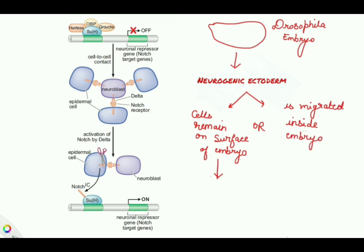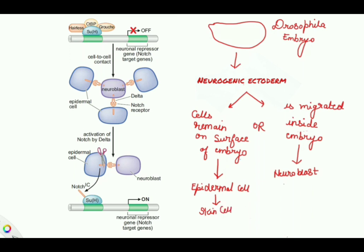Cells that remain on the surface of the embryo will form epidermal cells, which will form the skin of Drosophila in later stages of life. Cells that migrate inside the embryo will form neuroblasts, which will in turn form neurons. So epidermal cells form the future skin, and neuroblast cells form the future neurons.